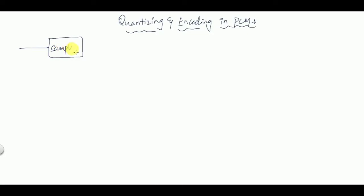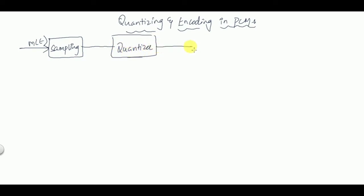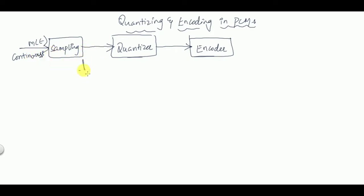So we have basically sampling. The continuous-time signal m(t) is given first to a sampler — the process is called sampling — and then it is given to a quantizer, and then to an encoder. These are the basic parts in the transmitter of PCM. m(t) in continuous time is converted into discrete time by using sampling, and you get a sampled signal.